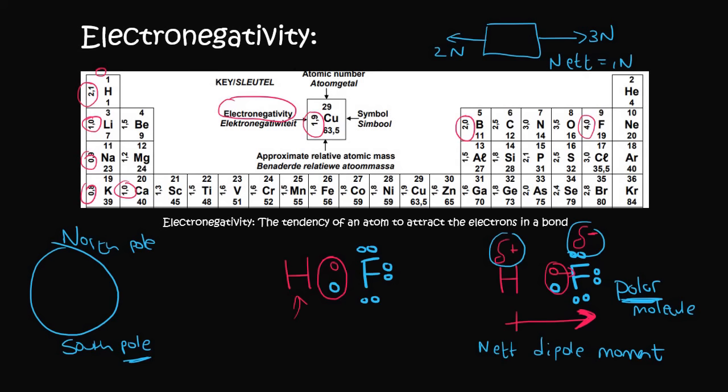Electronegativity is a number that tells you whether something likes electrons or it tells you how much it likes the electrons. So if we took hydrogen and fluorine, we can see that fluorine's number is 4, whereas hydrogen is 2.1. So that means that fluorine wants the electrons more. Because of that, because fluorine attracts the electrons more, it causes fluorine to become slightly negative, and it causes the hydrogen to become slightly positive.